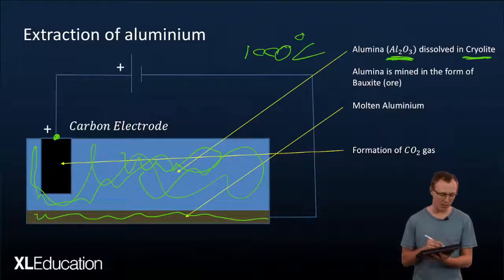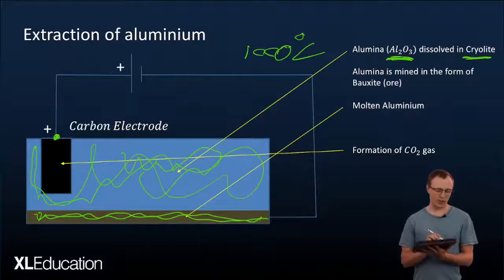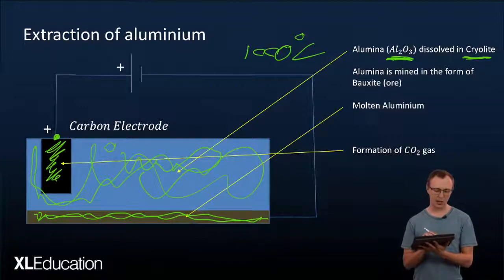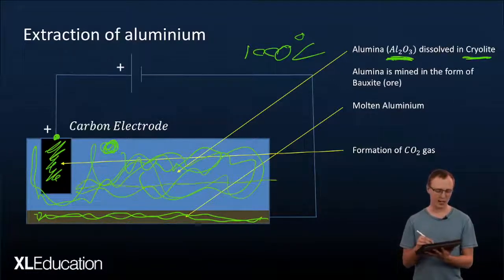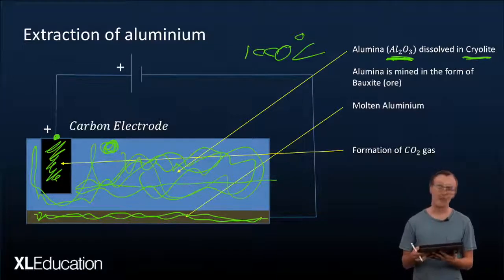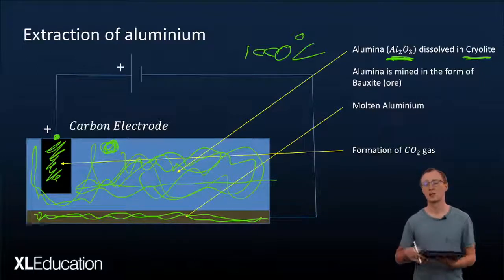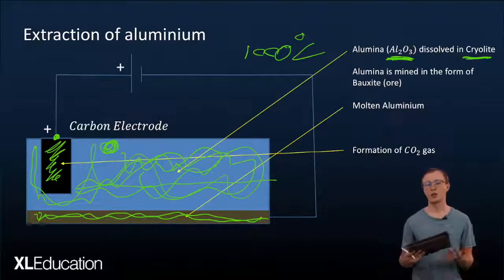So this carbon electrode reacts with the oxide, the oxygen ions that are in this electrolyte and that forms CO2 gas. So this carbon electrode often has to be replaced because the reaction actually uses it up. So our products here is molten aluminium and CO2 gas.